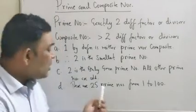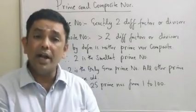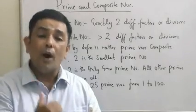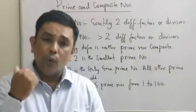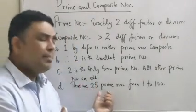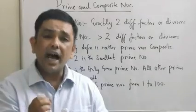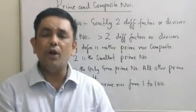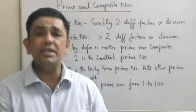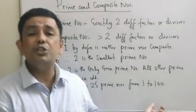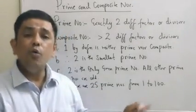Now please understand, this is not something which can be extended. It's not that there are 25 prime numbers from 1 to 100, so there will be 50 prime numbers from 1 to 200. One thing is very sure: there are 25 prime numbers when counted from 1 to 100. A lot of examiners and people who make questions for competitive exams actually use this property while framing questions.